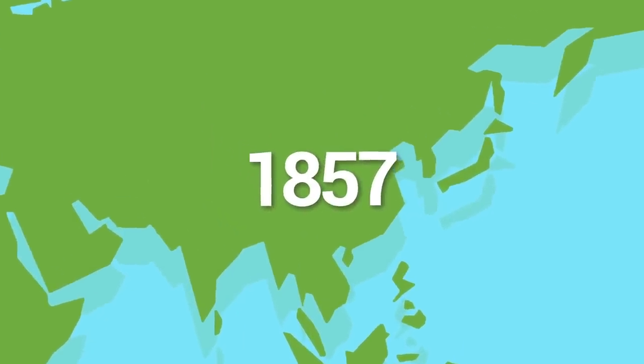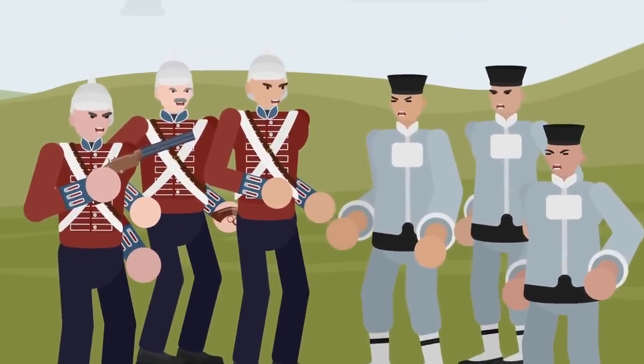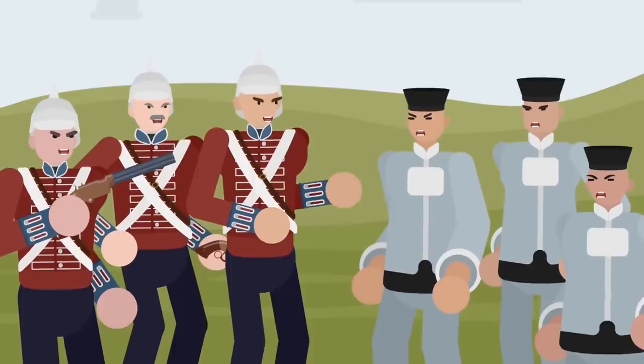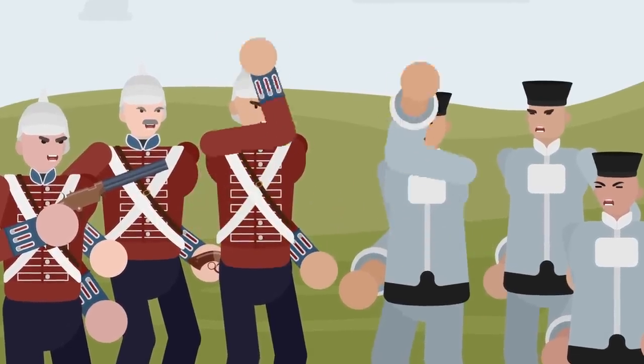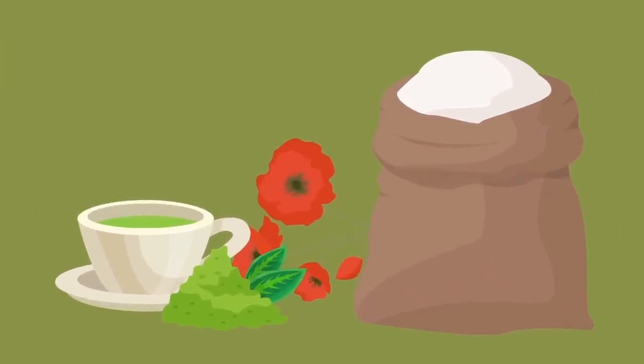The year was 1857, and the Second Opium War was raging between China and the combined forces of the English and French. It was one of the many bloody colonial wars fought over resources like tea, sugar, and the intoxicating Opium Poppy.